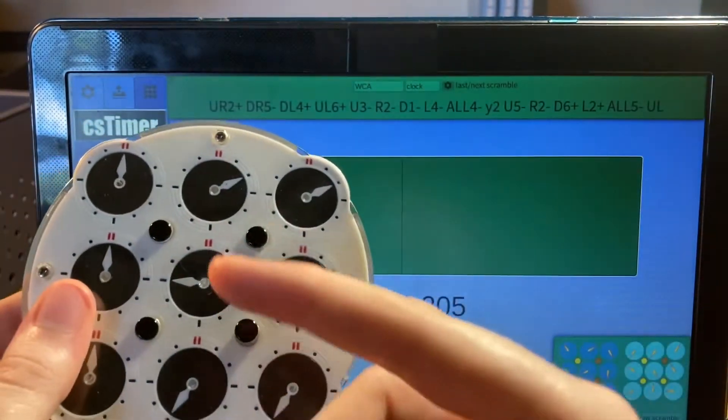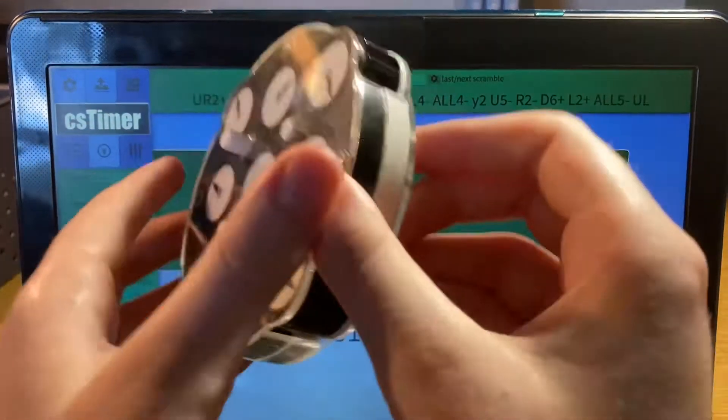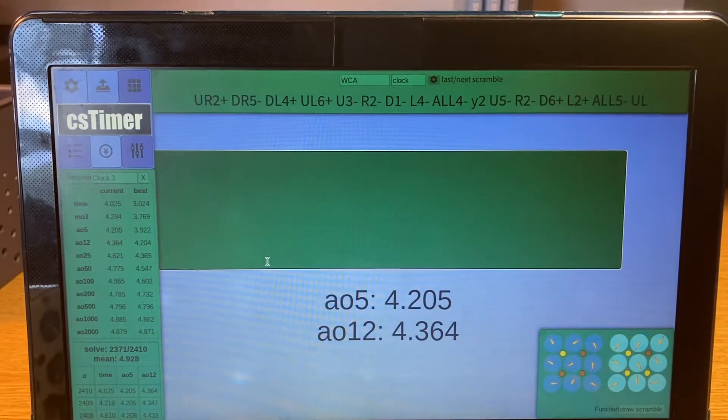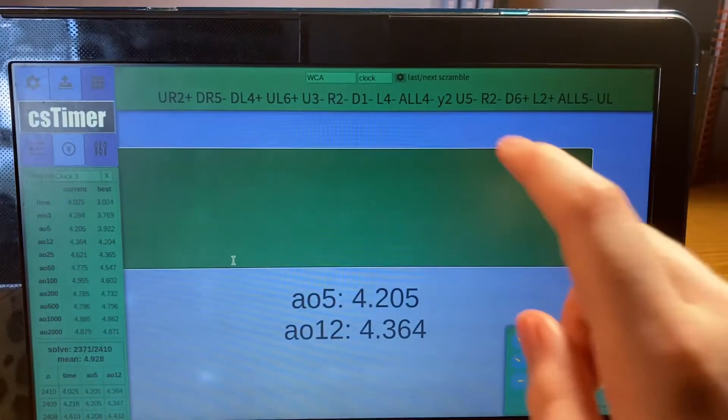You do that for the entirety of the scramble, and then I like to check my scramble with the draw scramble function down here.